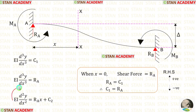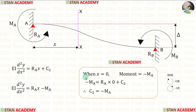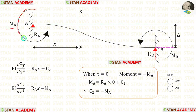EI d²y/dx² is the moment. When x is 0, the moment is MA. MA is acting in the anticlockwise direction. So, it will be negative.